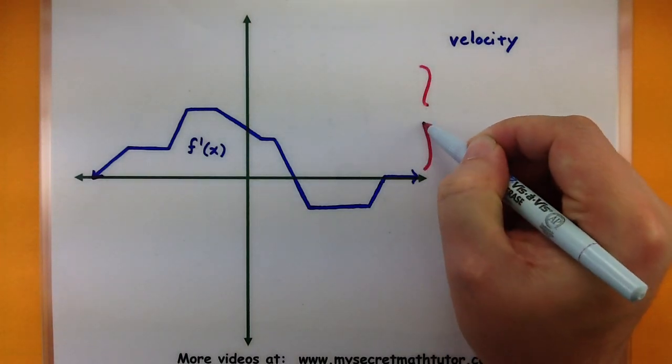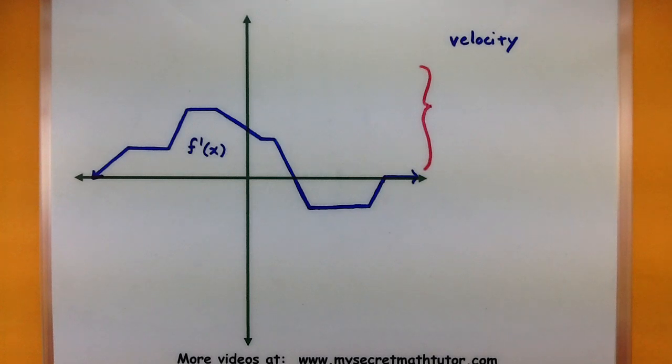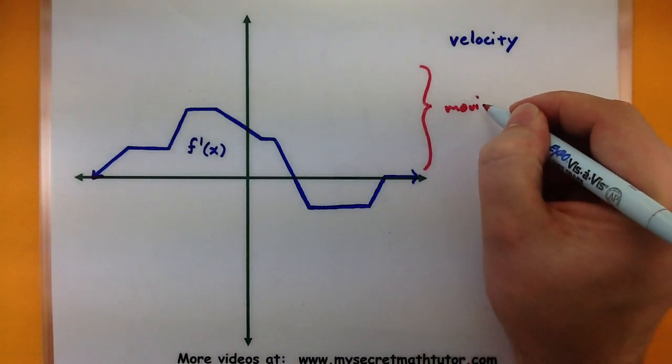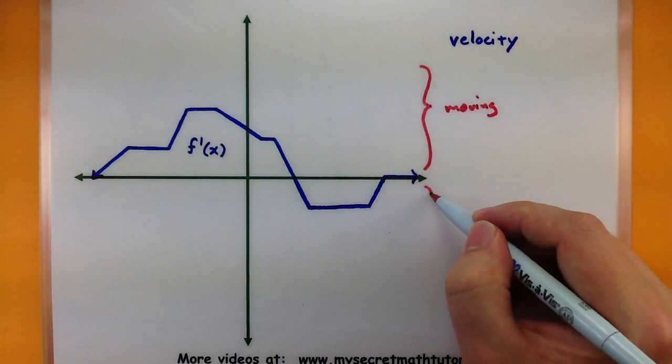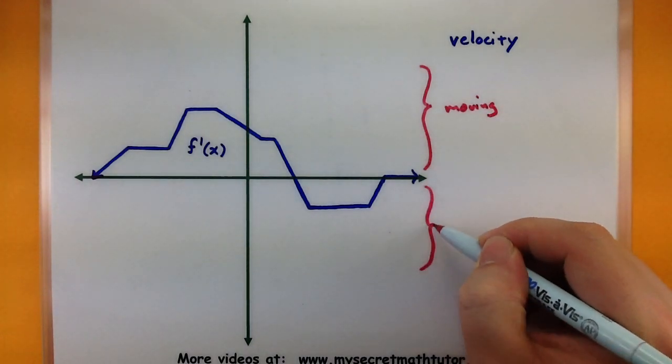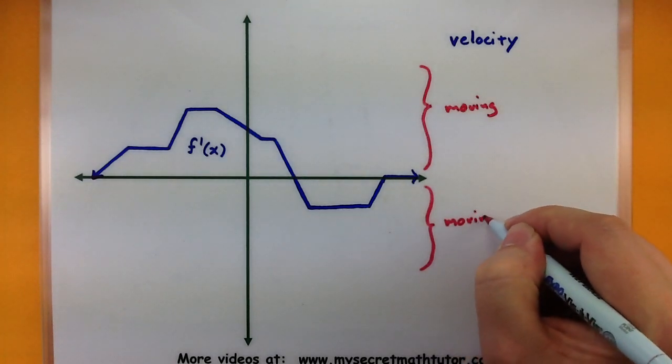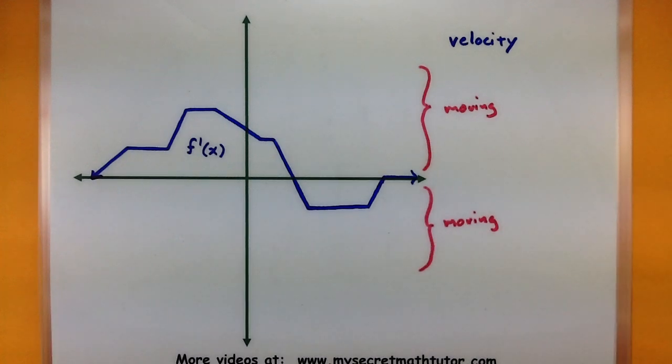this says we have some sort of positive velocity. We are moving. And anytime we're in the negative region, we have a negative velocity, we are still moving. The only time where we're not moving,